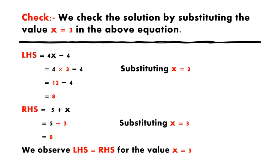Now let's check our answer. We check the solution by substituting the value x is equal to 3 in the above equation. So first of all we have to take LHS, which is 4x minus 4. Put the value of x is equal to 3. So 4 into 3 minus 4. 4 times 3 is 12. 12 minus 4 we get 8.